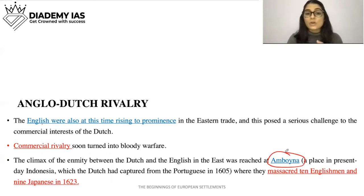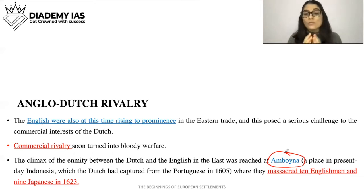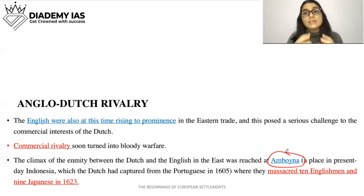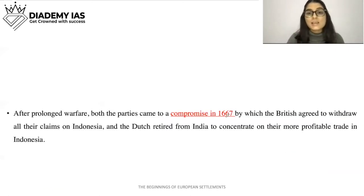The climax of the enmity between the Dutch and English in the east was reached at Amboyna, in present-day Indonesia. Here, the Dutch had earlier captured this place from the Portuguese. At Amboyna, the Dutch massacred ten Englishmen and nine Japanese. Because of this, their conflict grew considerably. But finally a compromise was reached in 1667.